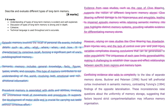Conflicting evidence also adds complexity to the idea of separate memory stores. Buckner and Peterson (1996) found left prefrontal cortex involvement in semantic memory, contrasting Tulving's 1994 findings of the opposite lateralisation. These inconsistencies raise questions about the uniformity of memory storage, suggesting that factors beyond strict compartmentalisation may influence memory organisation.